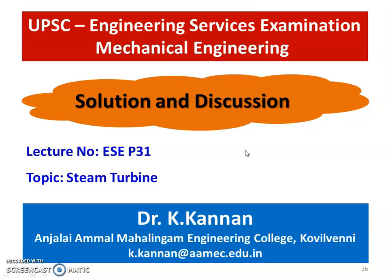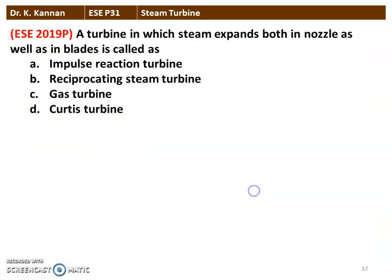We take questions from the steam turbine and discuss the answers. The first question from the 2019 question paper: a turbine in which steam expands both in the nozzle as well as in the blade is called as — impulse reaction turbine, reciprocating steam engine, gas turbine, or Curtis turbine. The correct answer is impulse reaction turbine. In the reaction turbine, the steam expands and pressure decreases both in the nozzle and the rotor blade. In the impulse turbine, the pressure drop takes place only in the nozzle. Curtis turbine is an example of an impulse turbine, but the answer to this question is impulse reaction turbine.